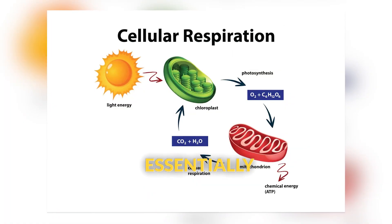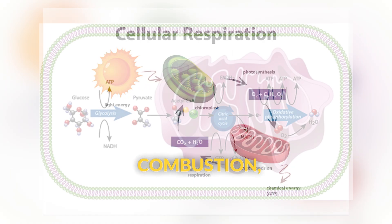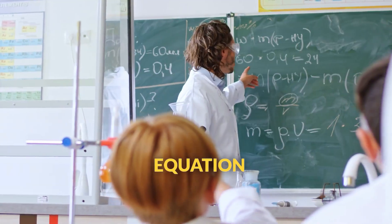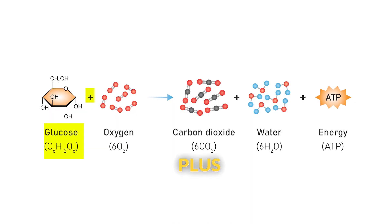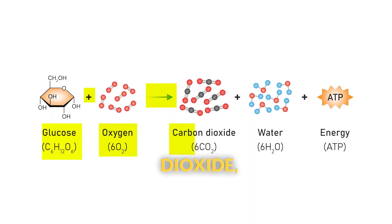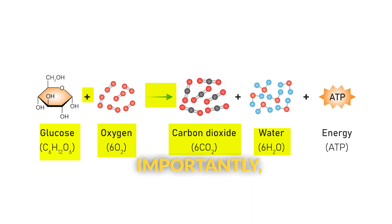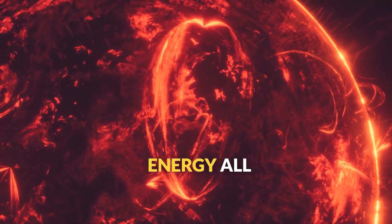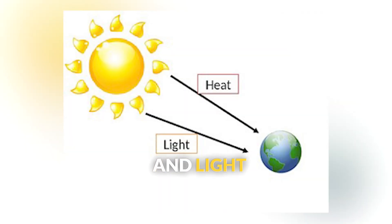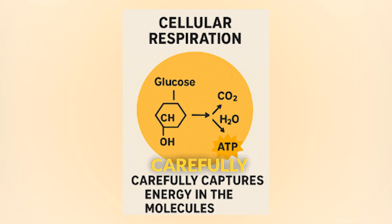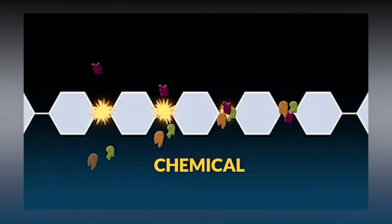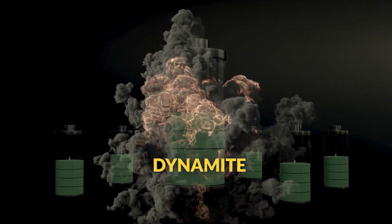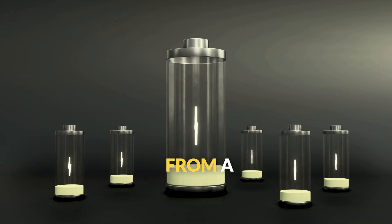Cellular respiration is essentially controlled combustion, breaking down glucose in the presence of oxygen to release energy. The overall equation shows glucose plus oxygen yielding carbon dioxide, water, and most importantly, ATP. Unlike burning wood in a fire, which releases energy all at once as heat and light, cellular respiration carefully captures energy in the chemical bonds of ATP molecules. It's like the difference between exploding dynamite and carefully extracting energy from a battery.